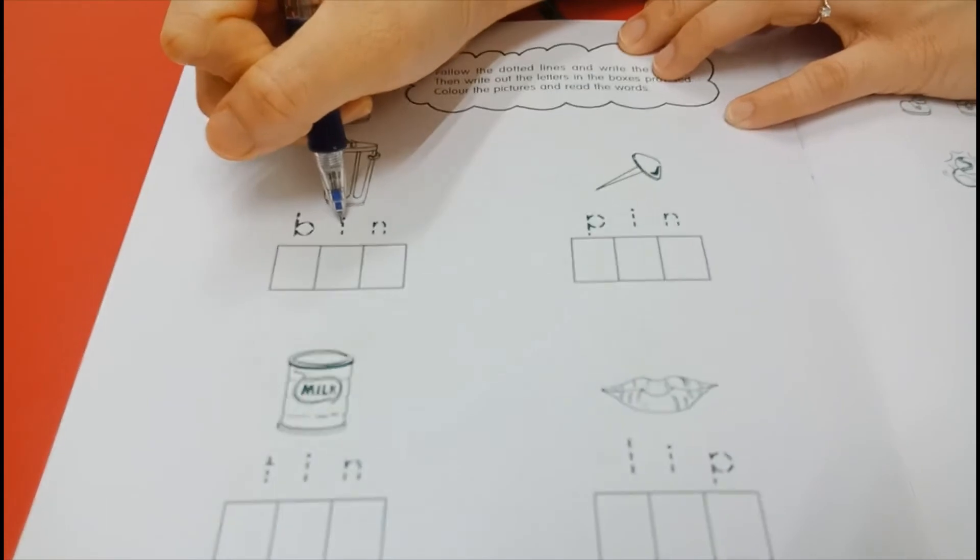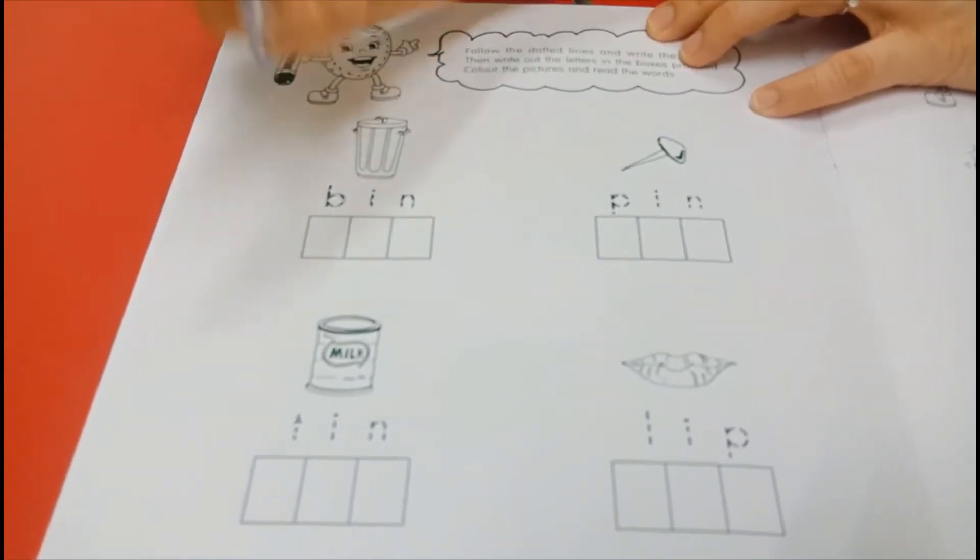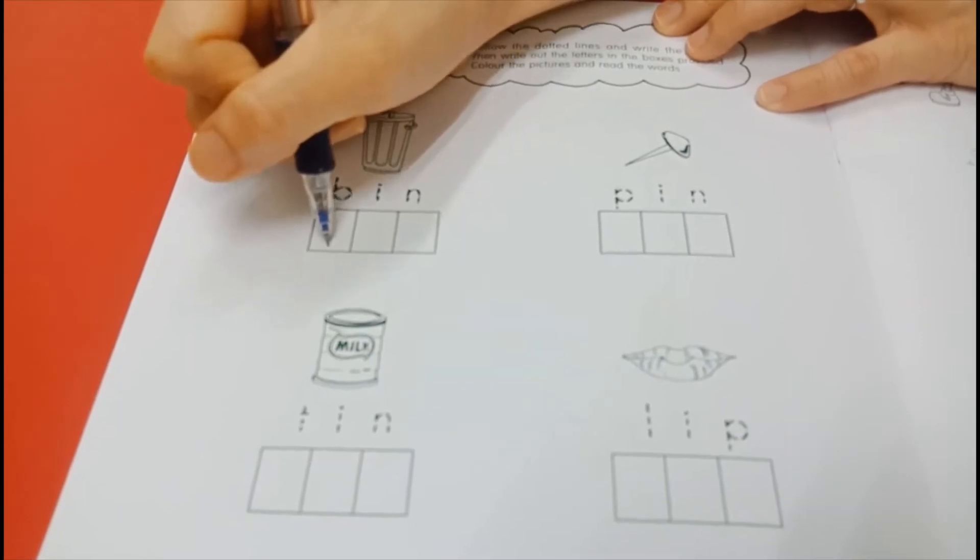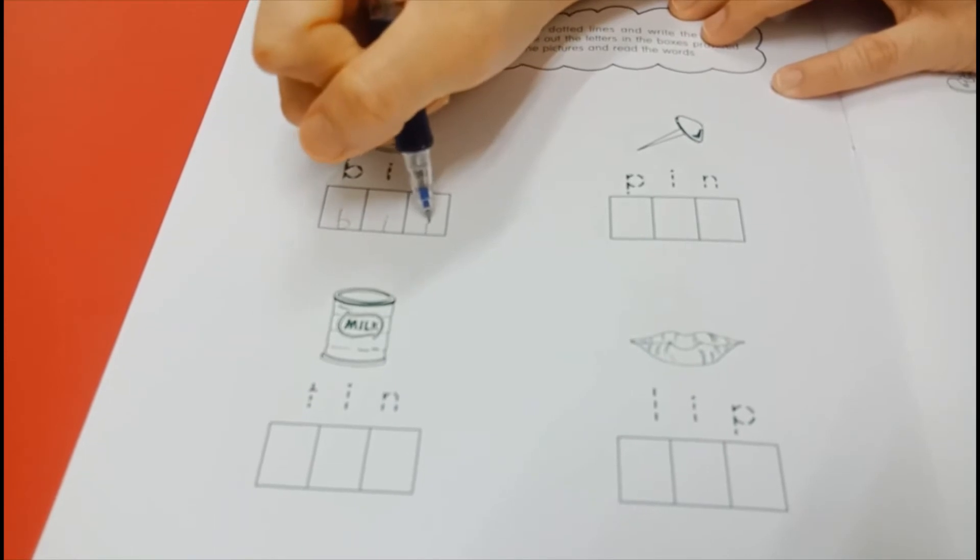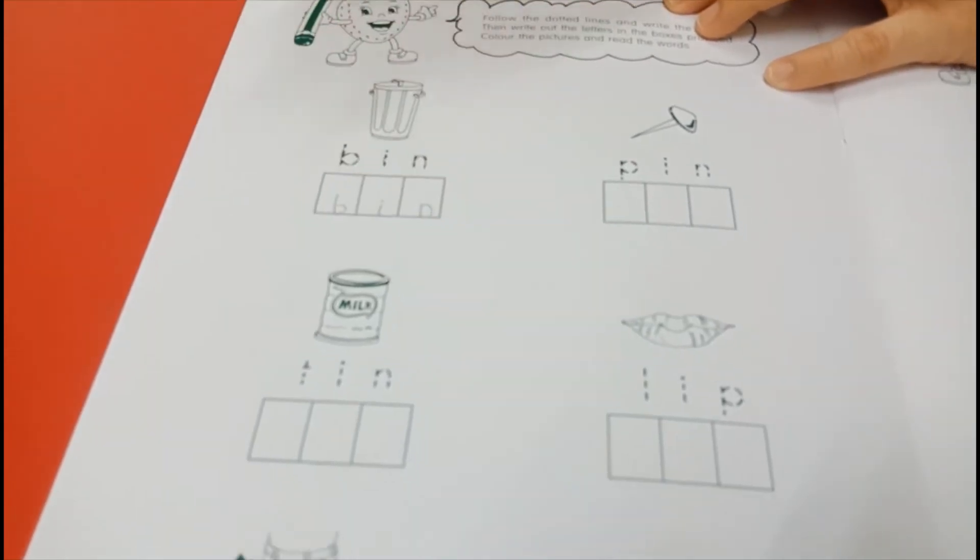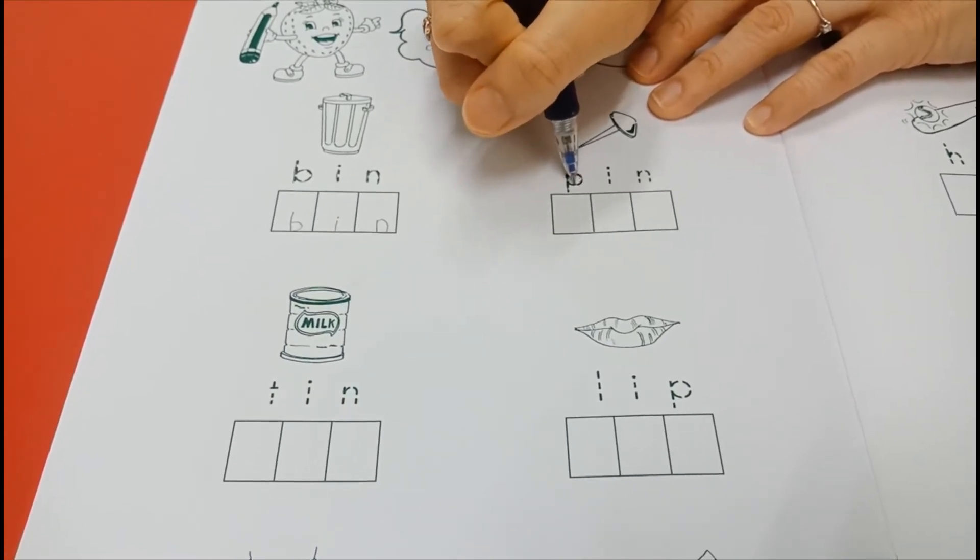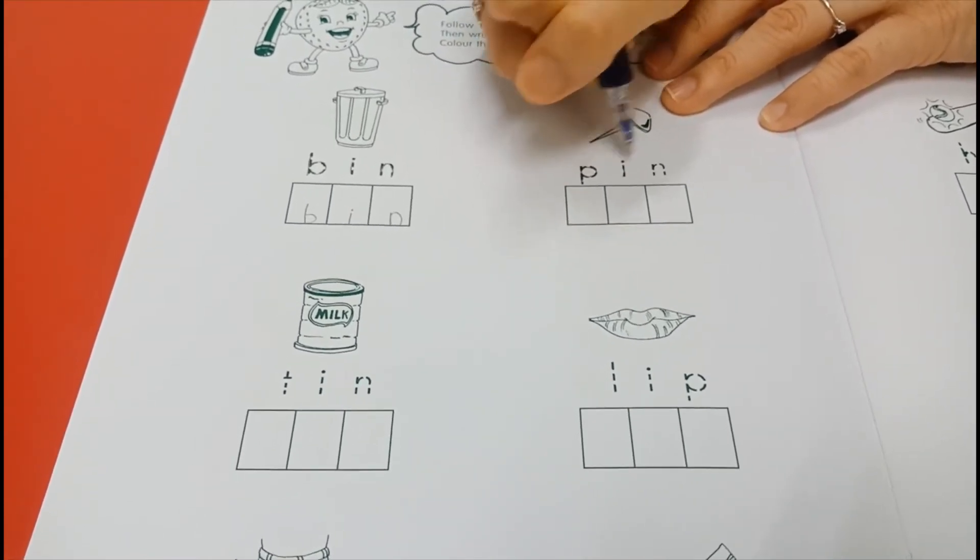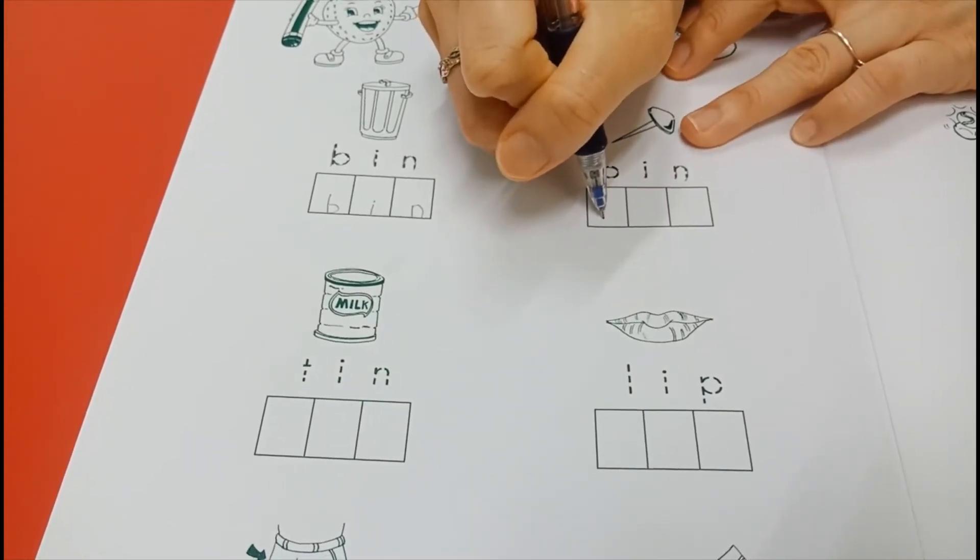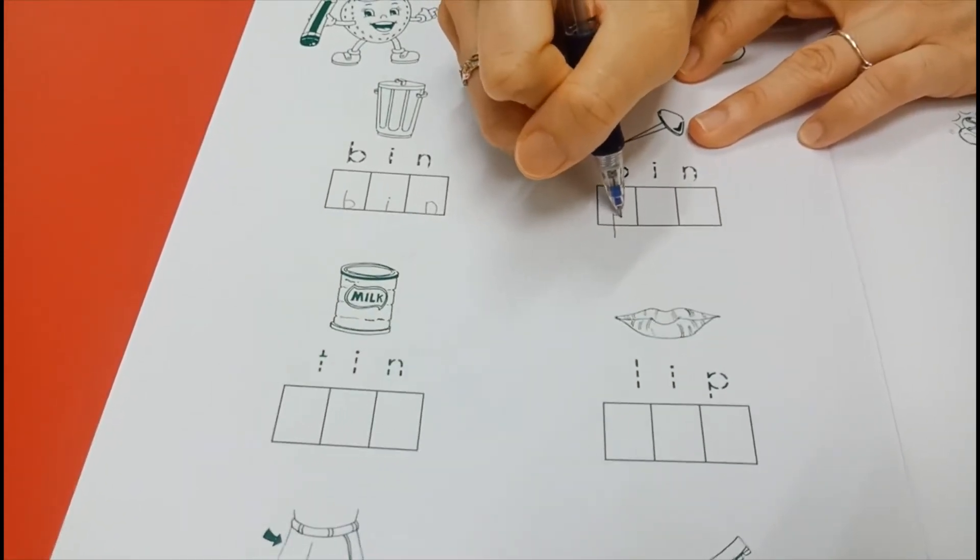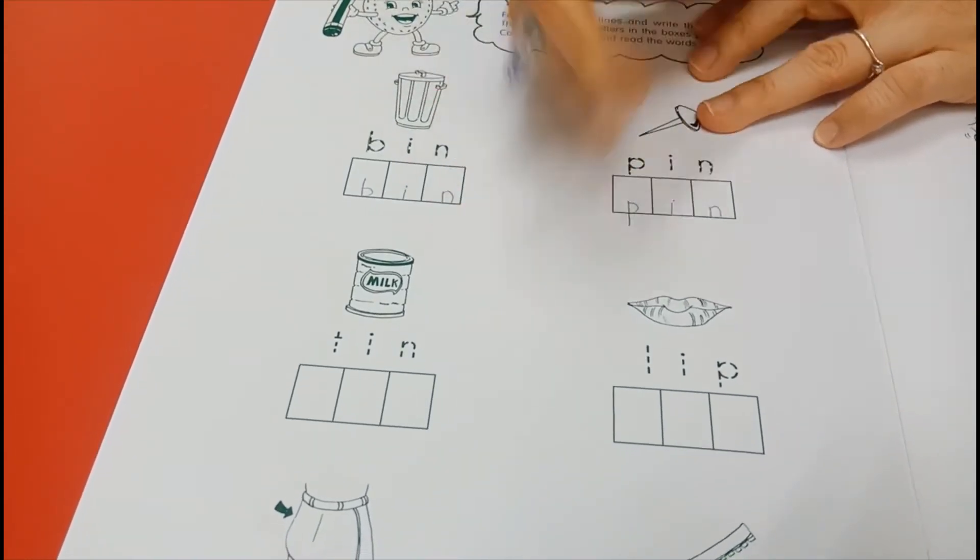B-I-N, bin. Write B-I-N, bin. Make sure you touch the line, okay? Next one, you have P-I-N, pin. So you write, P must go down. P-I-N, pin.